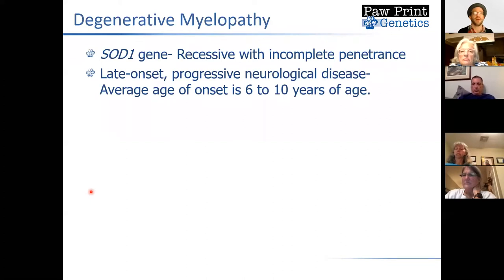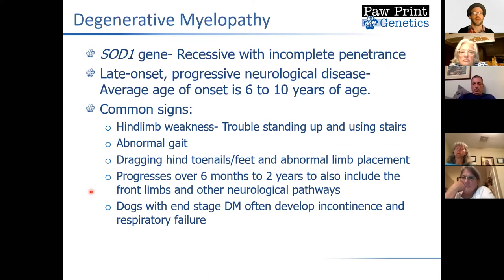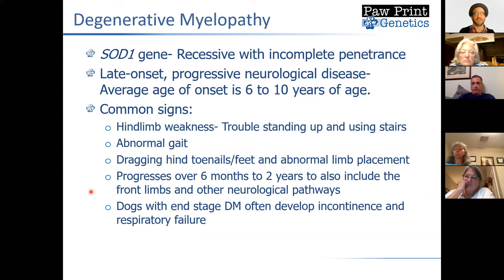Dogs that inherit two copies of the SOD1 mutation, if they are going to develop signs, most commonly show their first clinical signs somewhere between six and ten years of age. The most common things we see, especially in the beginning, would be hind limb weakness — difficulty standing up or trouble using stairs. People often notice their dog's hind limbs or toenails dragging on the pavement. After those initial signs appear, it slowly progresses in severity over about six months to two years. Usually within two years the dogs are unable to walk, and most people make very challenging decisions at that point.